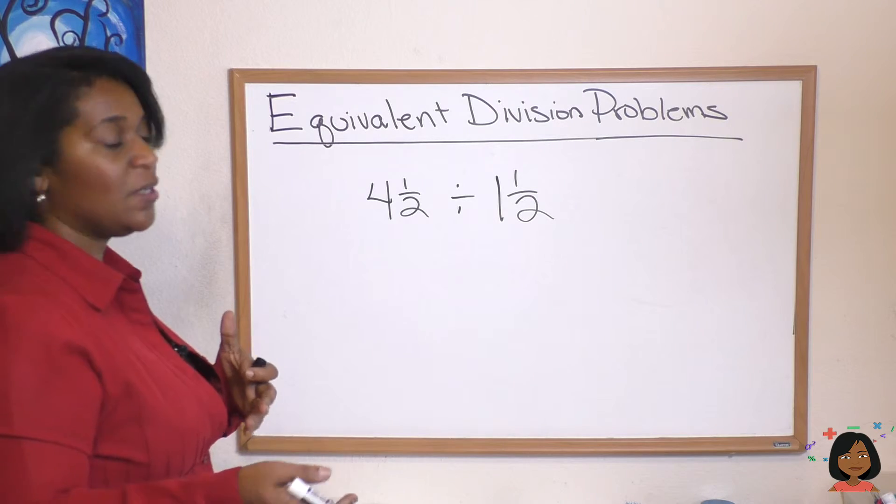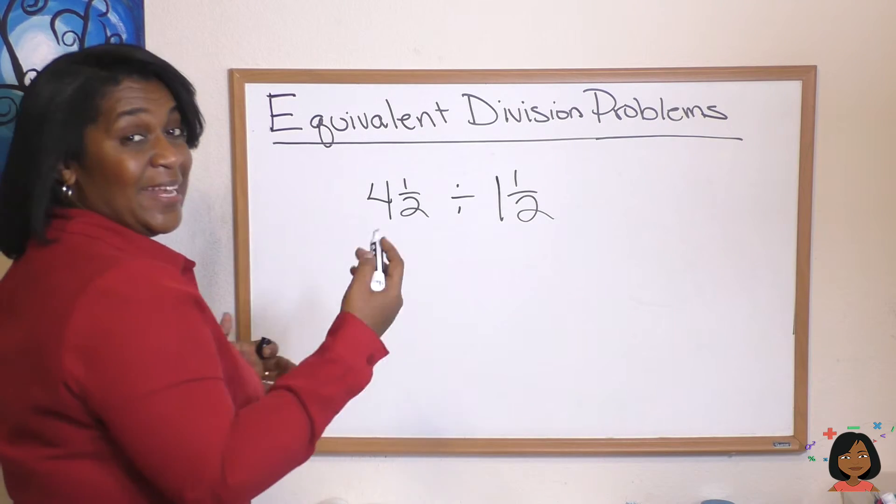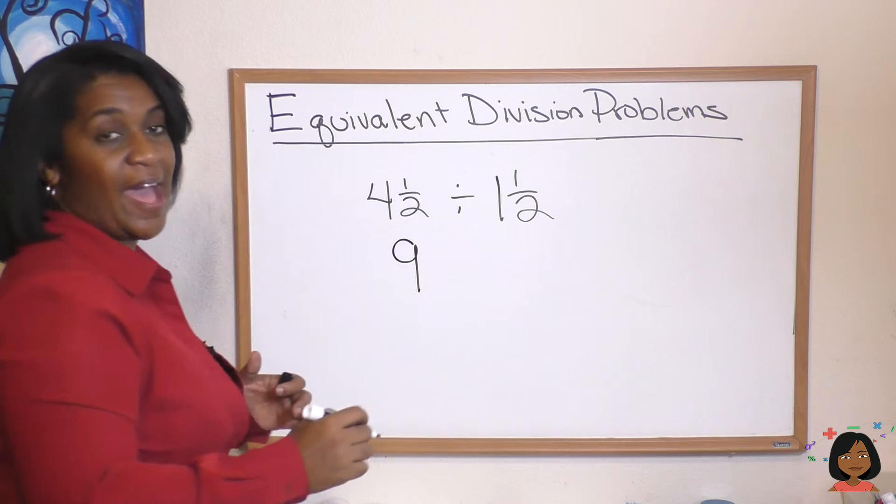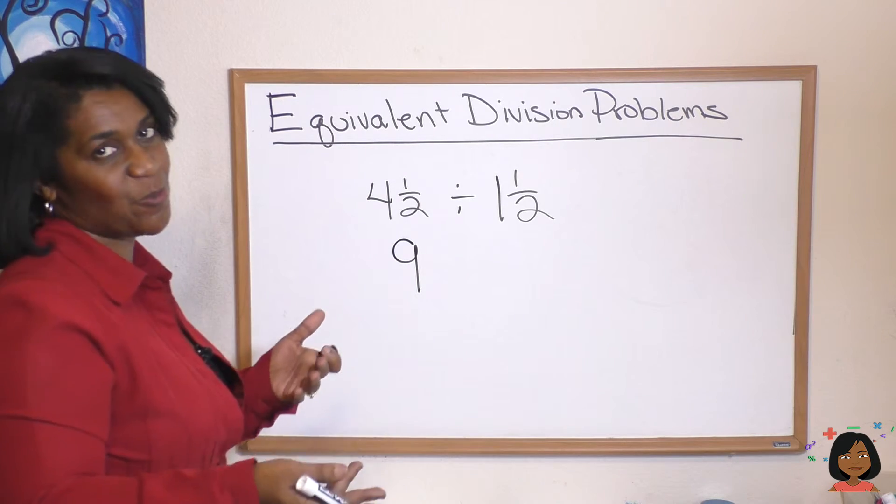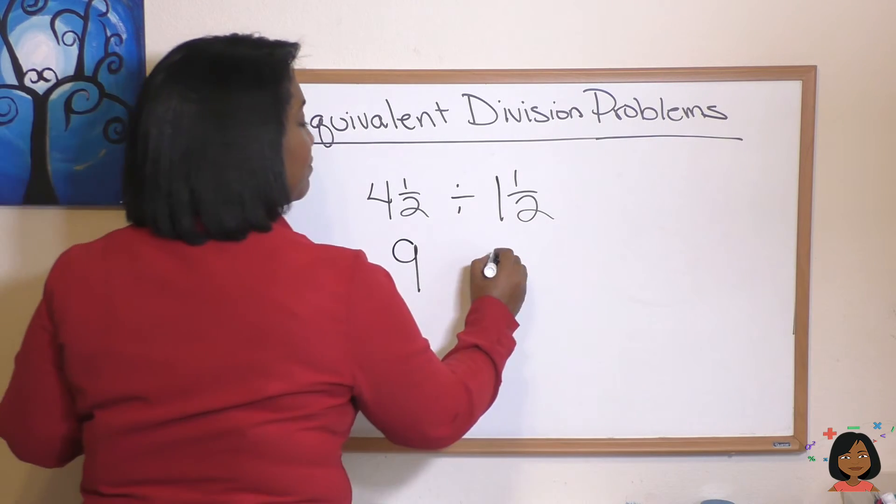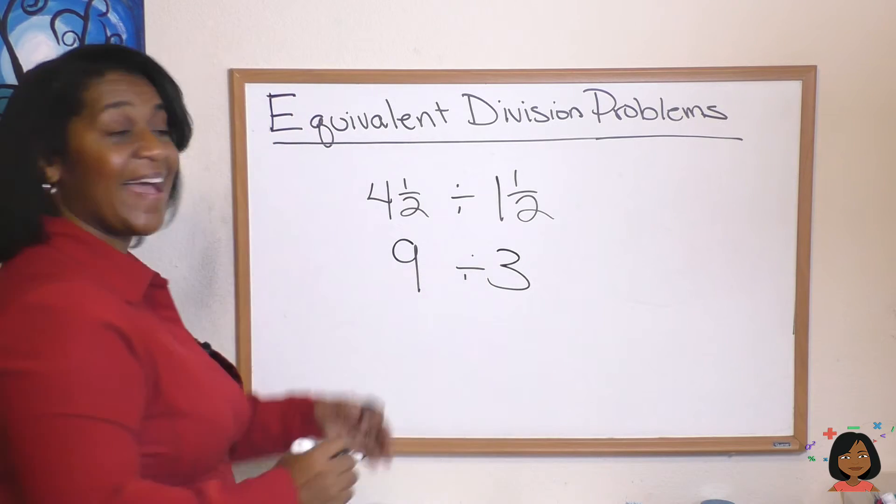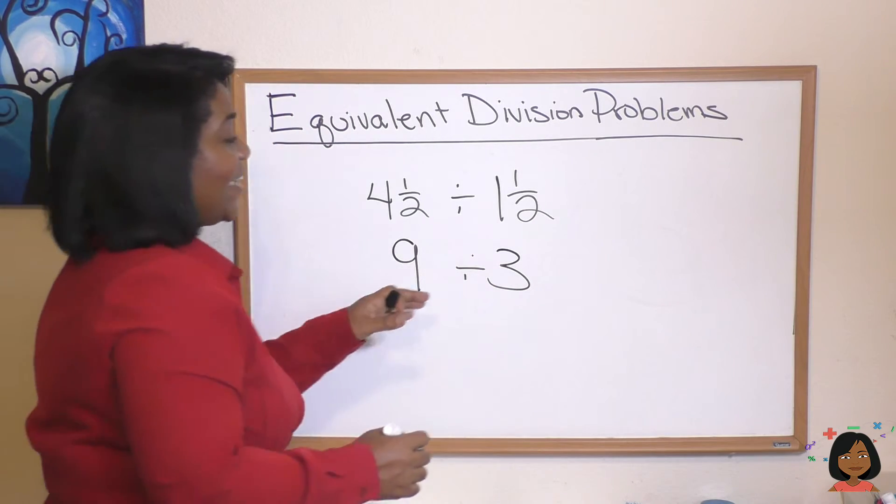So four and a half times two would be nine. One and a half times two, or one and a half plus one and a half, is three. That's a heck of a lot easier to do in my head. Nine divided by three equals three. That's my answer.